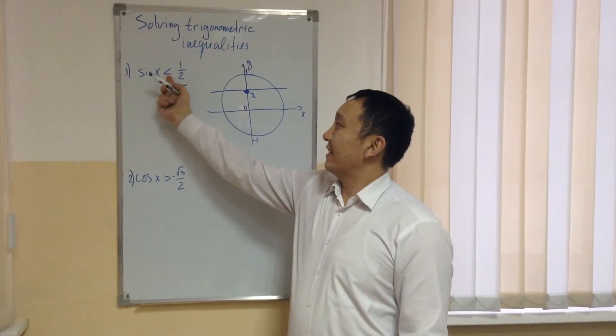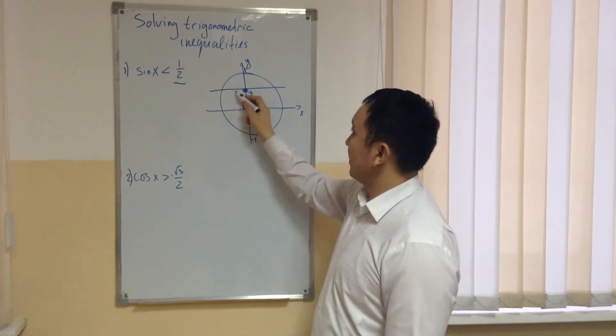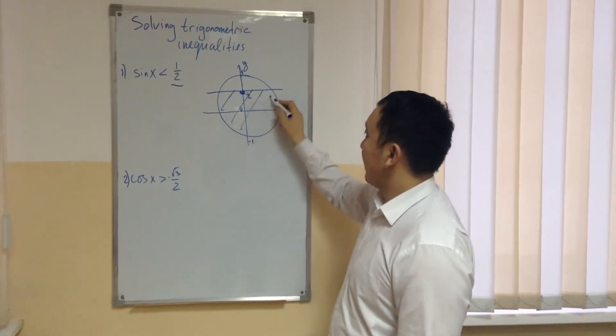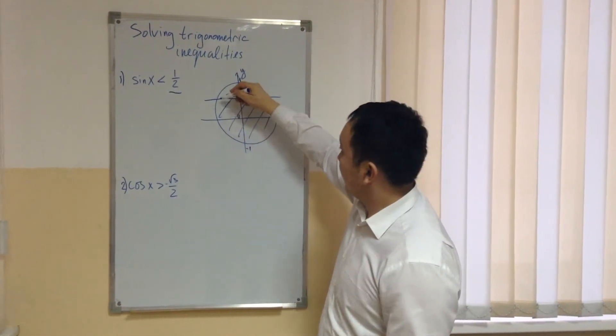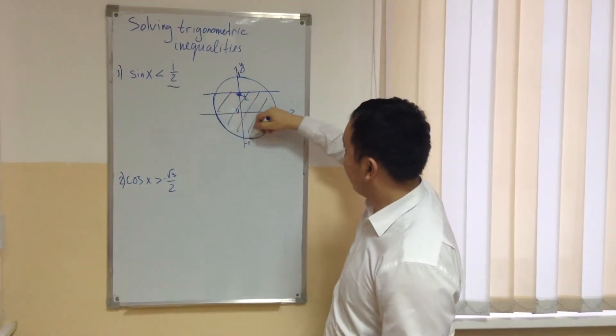If sin x less than 1 over 2, it means that we have to take the under part of this, below part of this line. So this arc is our solution.